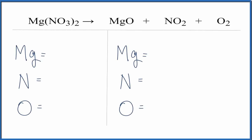This is a little bit more challenging reaction. We have magnesium nitrate undergoing a decomposition reaction, breaking down into magnesium oxide, nitrogen dioxide, and oxygen. We need to count up all the atoms and then see if we can balance this.